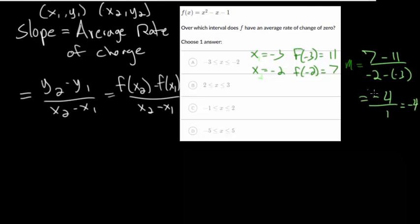So what this means is that on average, between these two points, when x goes over 1, the y value goes down 4 units. Or essentially, that's what A represents. So that's not an average rate of change of 0, so we can eliminate that one.